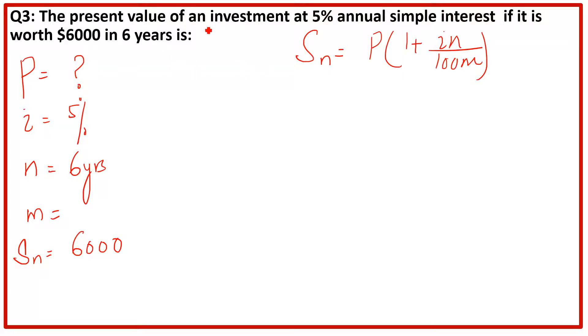So now what is the meaning of the question? You have to find out the present value of an investment. Whatever amount you have, suppose you are going to invest at 5% simple interest rate, and after six years it will be six thousand. So what is the present value of your amount, what amount you are going to invest?